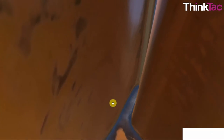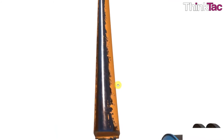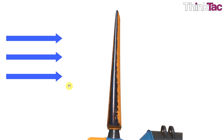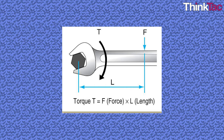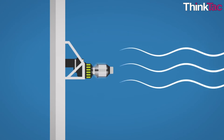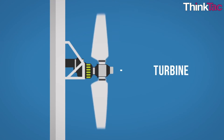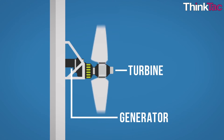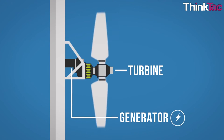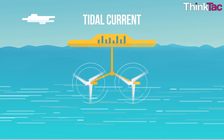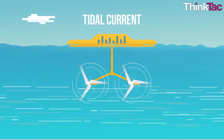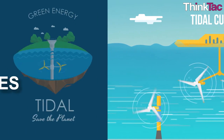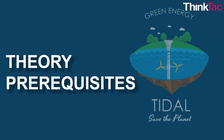Turbine: a machine for producing power where a rotor is made to revolve by a fast-moving fluid. Torque: the moment of force or system of forces that causes rotation — a result of the force that water or air exerts on the turbine blades, causing them to turn. Flux: continuous movement of water due to changing tides. There are some theory prerequisites that you should also know.